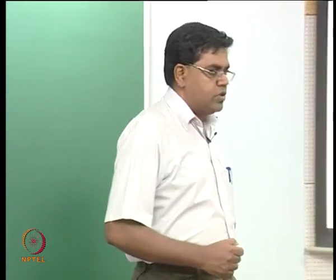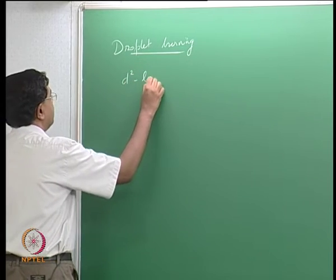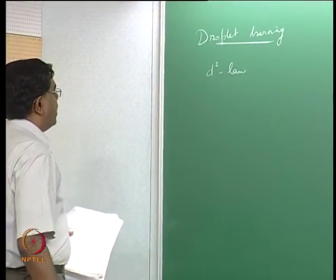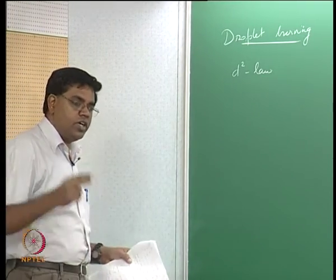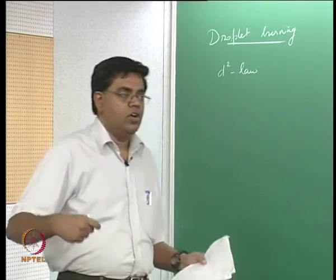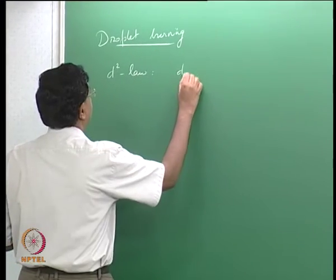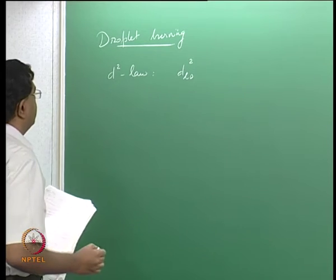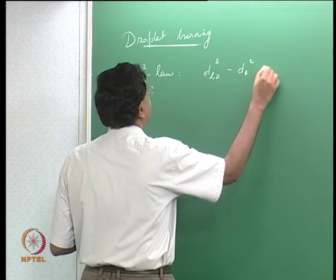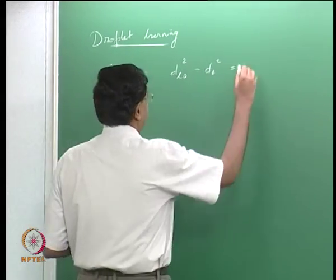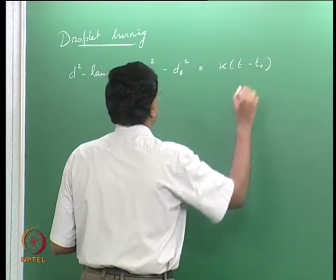The key problem in droplet combustion is to examine the d-squared law. Starting with a droplet of diameter d_l0 at time t0, the d-squared law states that d_l0 squared minus d_l squared equals k times (t minus t0), where k is the evaporation constant. This describes the rate of evaporation or combustion of the droplet dictated by how the droplet diameter changes with time.